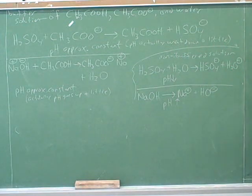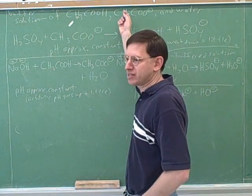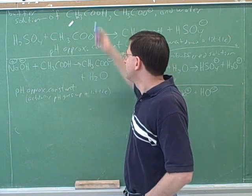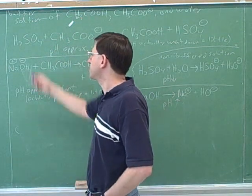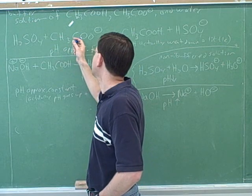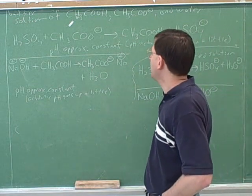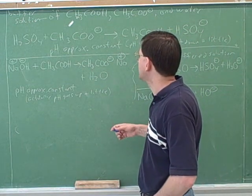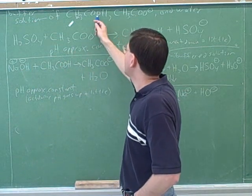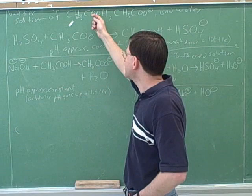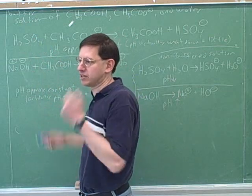We can now see why to make a buffer, you need both an acid and a base. If we only had the acetic acid, there would have been nothing to sponge up the sulfuric acid — we needed the weak conjugate base to sponge up the acid. And we needed the acetic acid to sponge up the base. So you need the acid to sponge up any base you might add, and you need the base to sponge up any acid you might add.